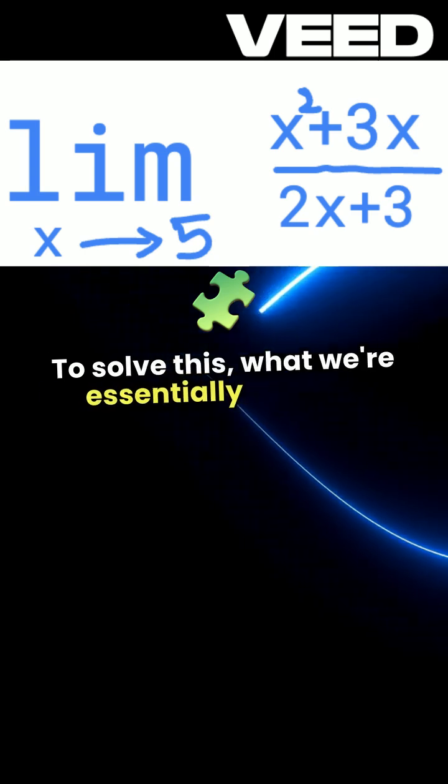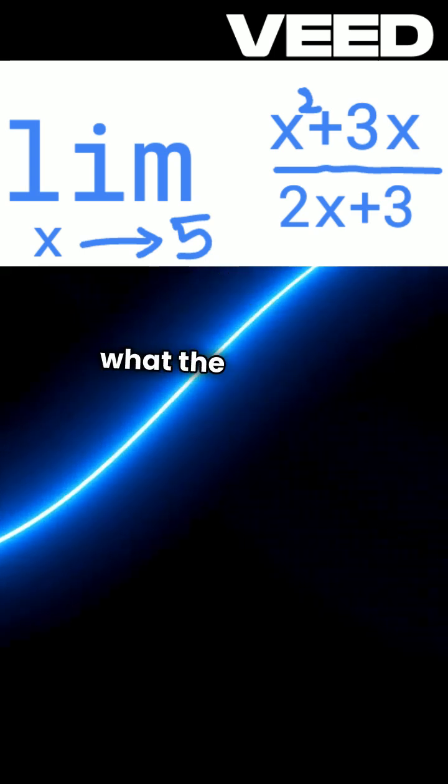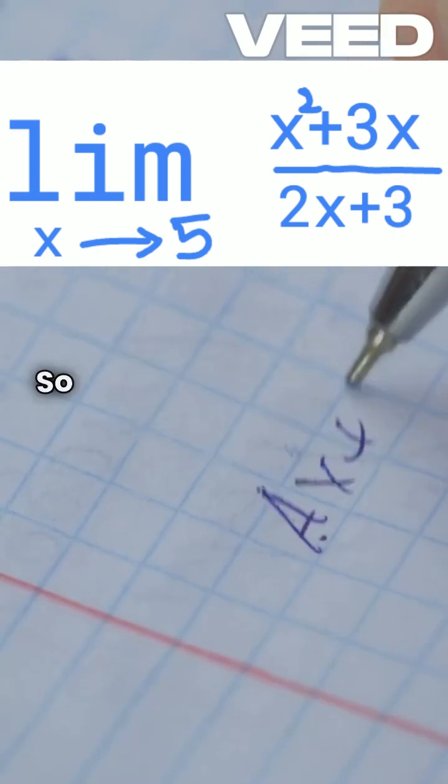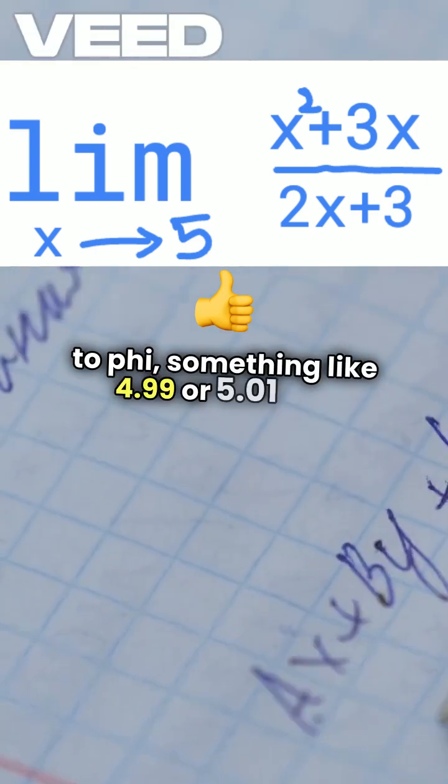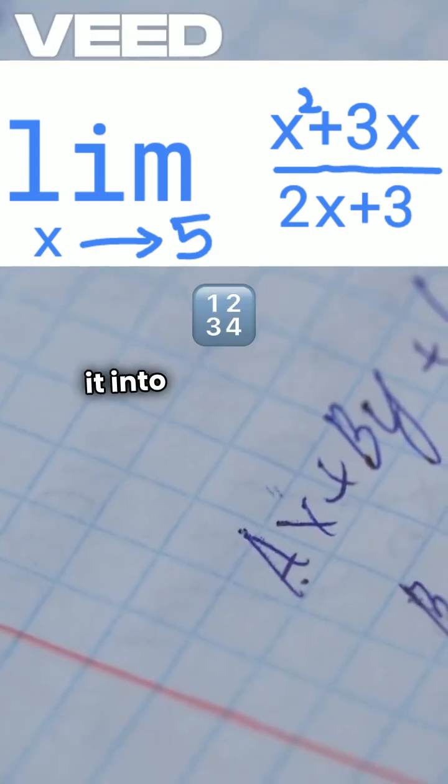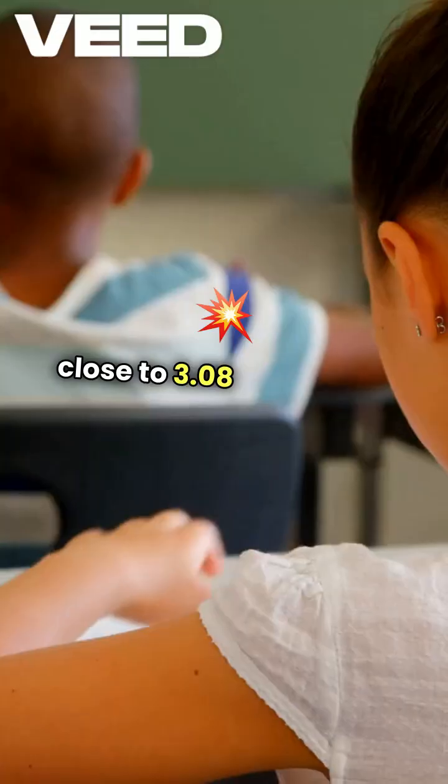To solve this, what we're essentially doing is finding what the function produces as x approaches 5. So we could take a value very close to 5, something like 4.99 or 5.01, and substitute it into the equation, which gives you a value close to 3.08.